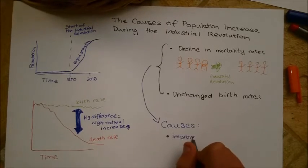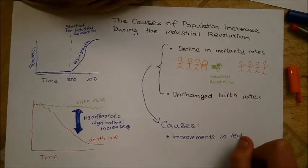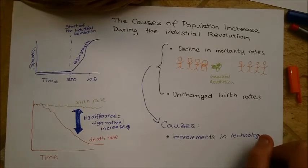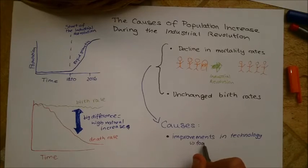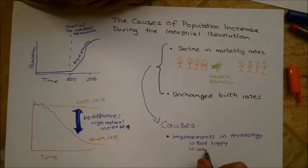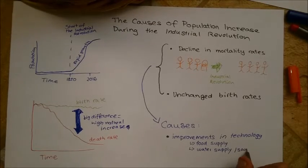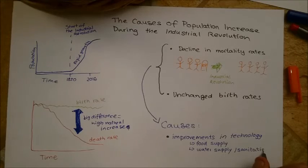But why did the birth rates remain as they were? The unchanged birth rates can be explained mostly by social factors. The first one could be that people previously wanted more children than remained alive and the fall in the death rates enabled them to realize that desire.